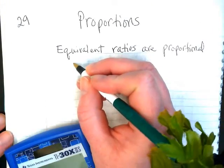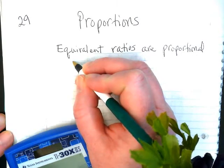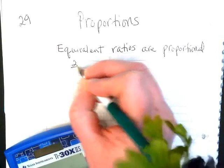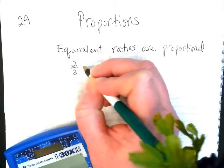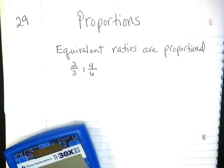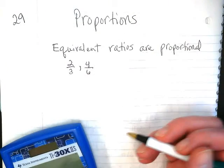If I said that I have, let me try, yeah, this number, two-thirds and four-sixths. The question is, are they proportional?